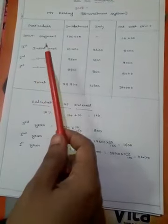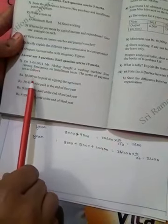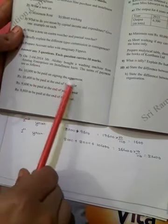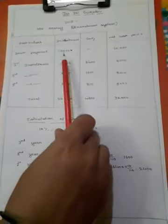In the problem, first down payment is 10,000 to be paid on signing the agreement. Down payment is 10,000.